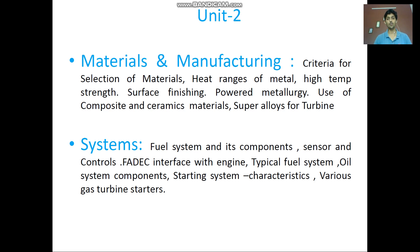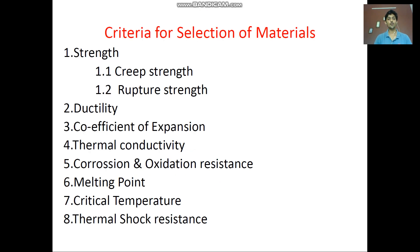To give a brief idea of what is included in the second module was just discussed. Now the first topic — criteria for selection of material — covers how exactly we select a particular material in gas turbine engines. The first criterion is strength: how strength plays a major role in selecting a material, given that some components are exposed to creep and some to rupture.